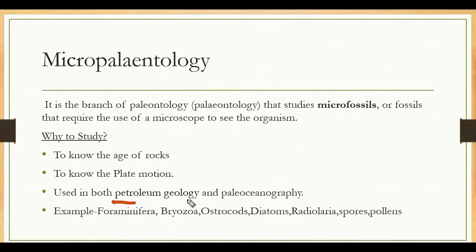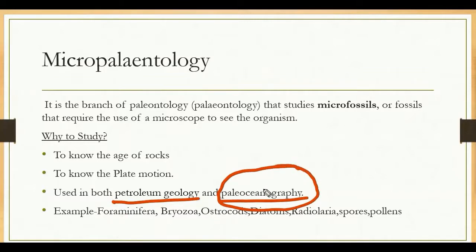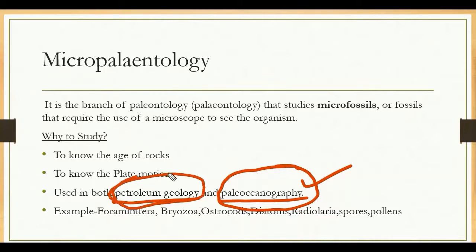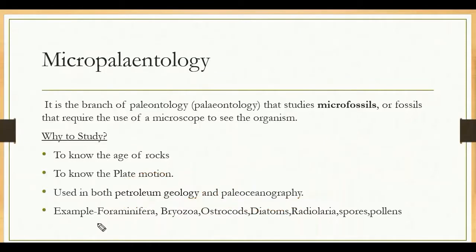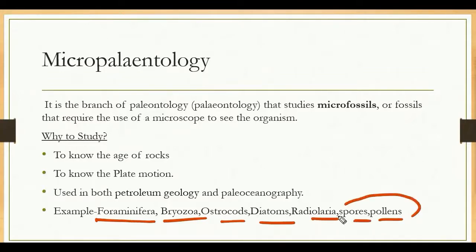We also learn about petroleum geology and paleo-oceanography. Foraminifera, radiolaria, and diatoms are ocean-dwelling organisms, so we can study the ancient ocean and its environment. We can find petroleum basins using these micro-fossils. Examples of micro-fossils include foraminifera, bryozoa, ostracods, diatoms, radiolaria, and spores and pollen.